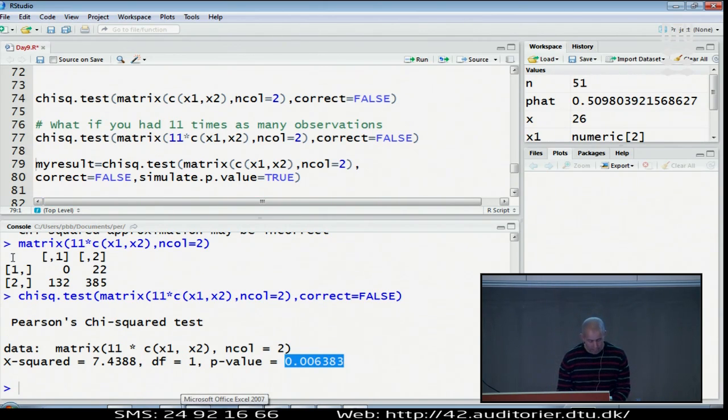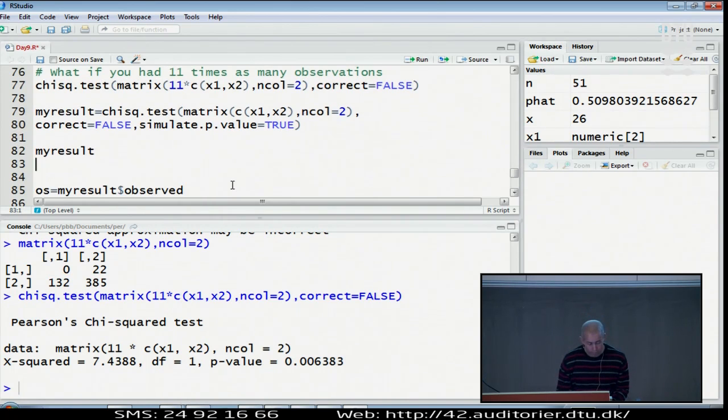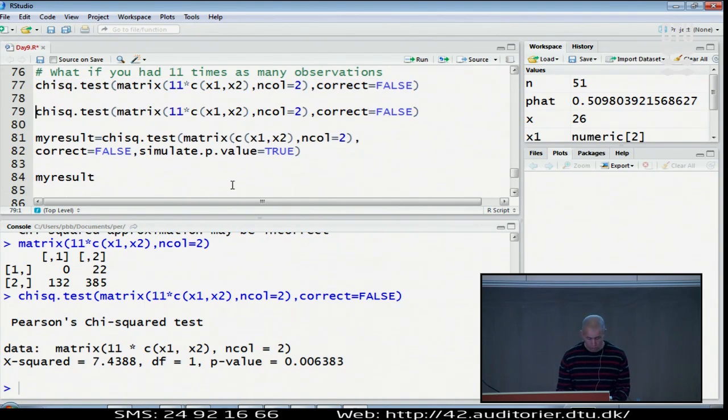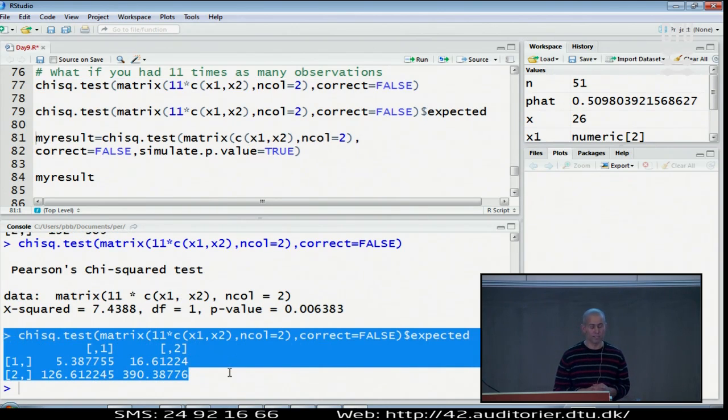Note that one of the observed values is really zero. What are the expected values here? That's the final thing I will show you. You can actually get the expected values by writing it like this - it would tell you the expected values for this data.